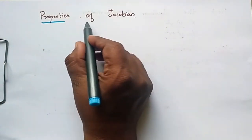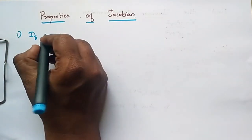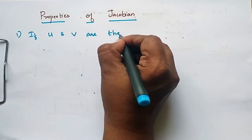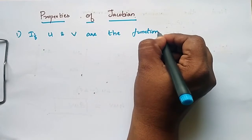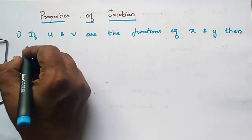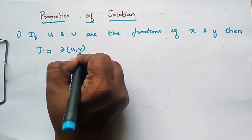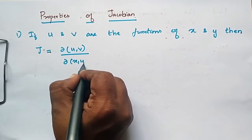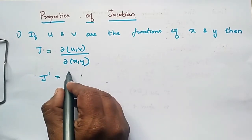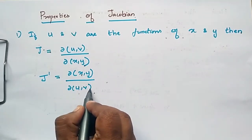Properties of Jacobian. First one: if u and v are functions of x and y, then J is equal to ∂(u,v)/∂(x,y), and J dash is equal to ∂(x,y)/∂(u,v).